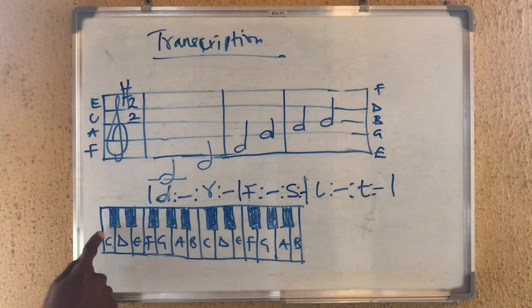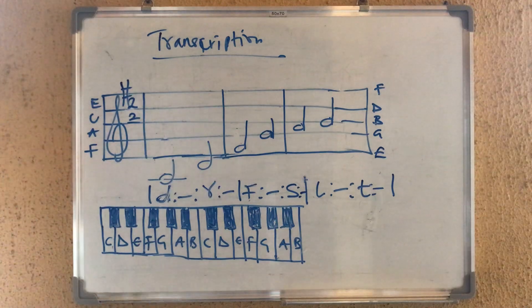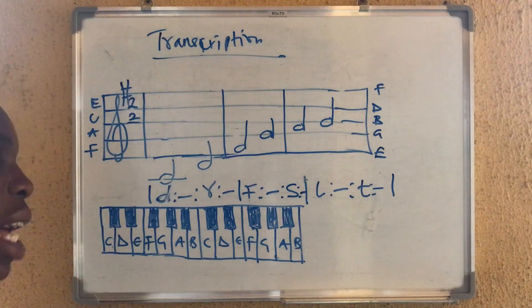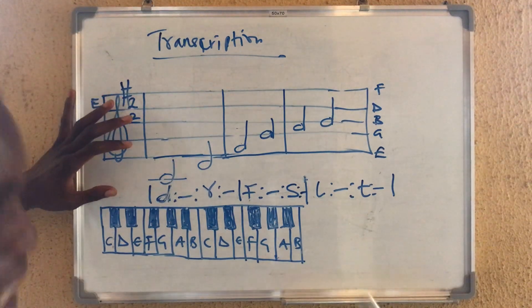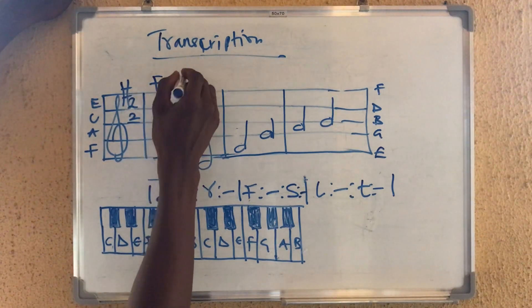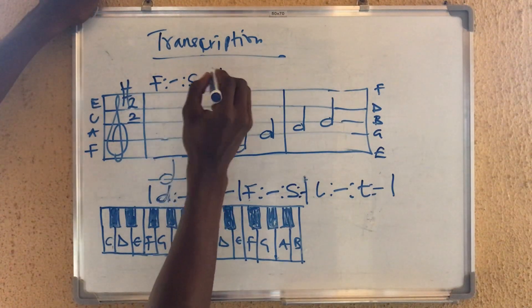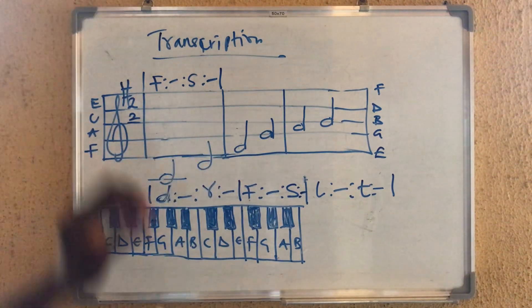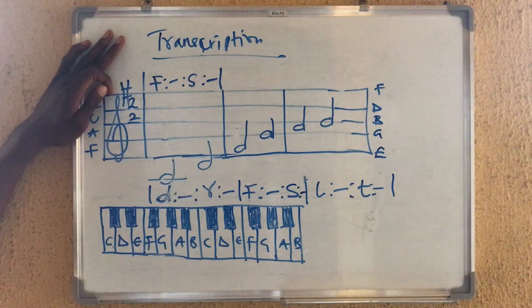So here is key G now, and C on key G is what? C on key G is F, which is fa. Listen to me very well. Here is C, this is normal C. And C on the keyboard, as in respect to key G, what is C? C natural in key G, C natural in key G is fa, which is fa. Then you have D. D in key G is so. You put your bar.